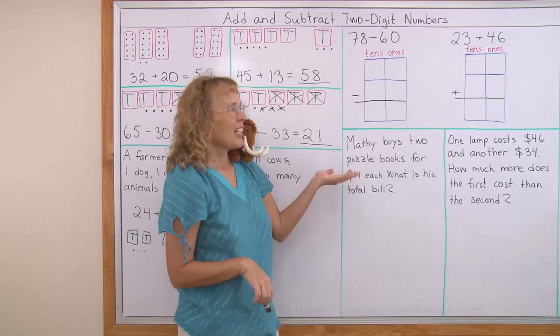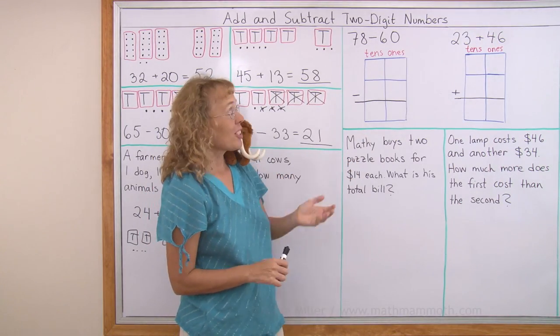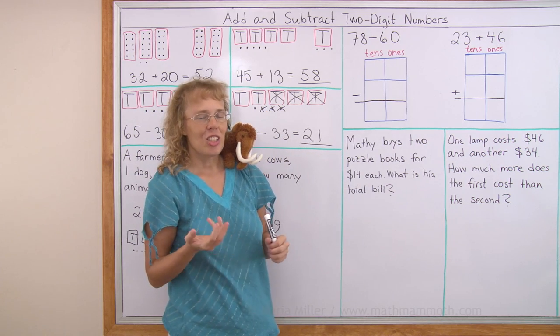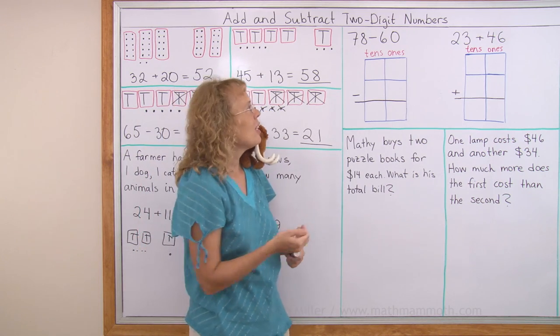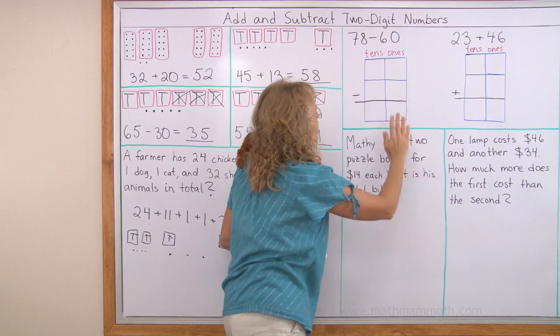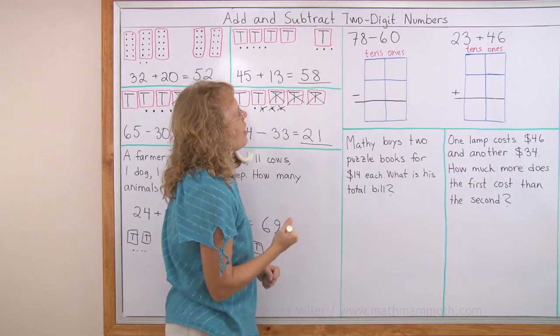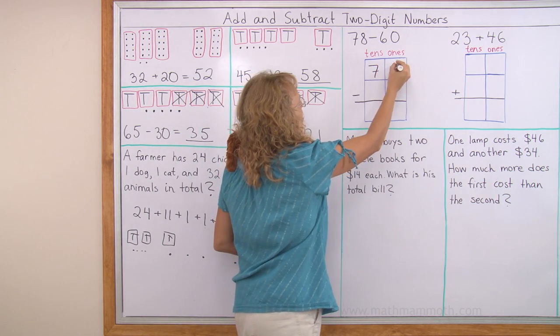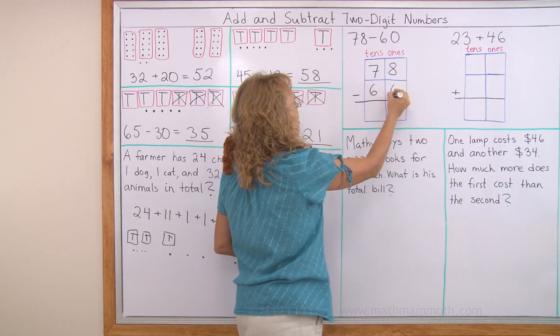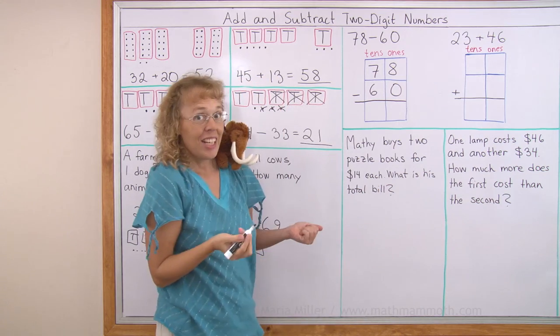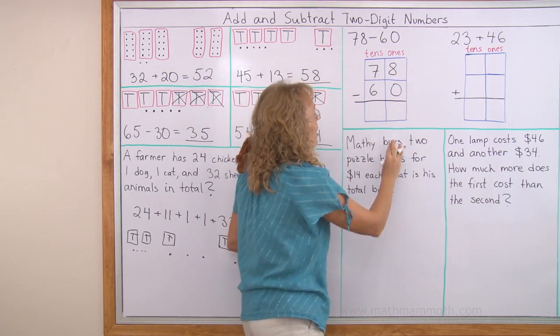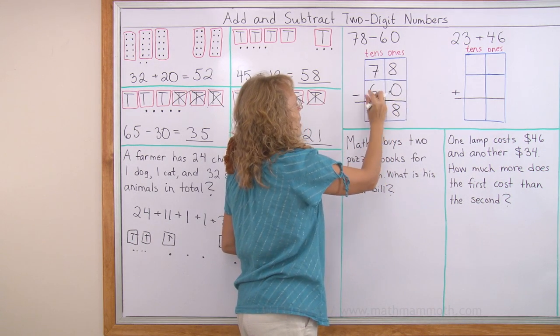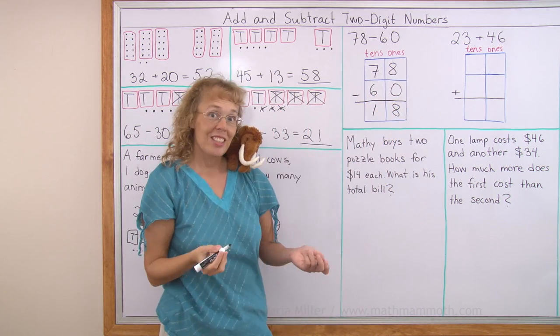We can also use these boxes to add or subtract two digit numbers. It's also called adding or subtracting in columns because here is a column. Here's a column. Now I just write those numbers in my boxes. 78 goes on top. And from it we subtract 60. So it goes here. Six and zero. Now it's easy. Just first subtract here in the ones column. Eight minus zero. Eight. And then seven minus six. One. So the answer is 18.